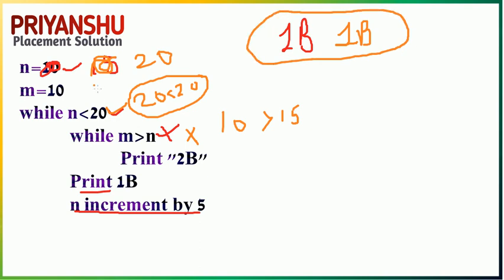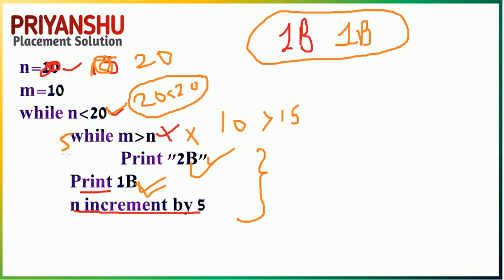This type of question can be asked in three ways: how many times is 1b printed, how many times is 2b printed, or how many times is the inner loop executed. So be prepared for all three variations.